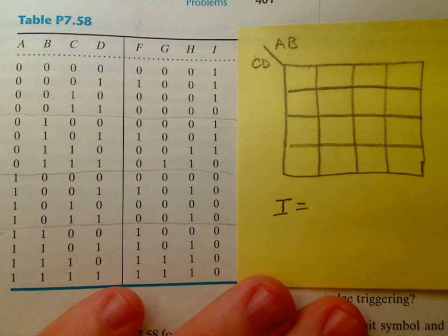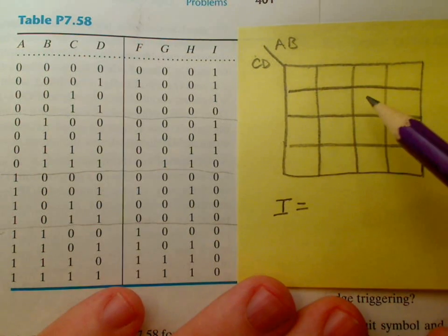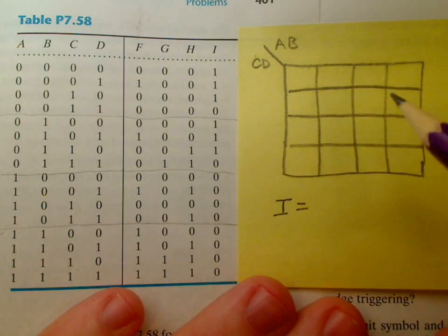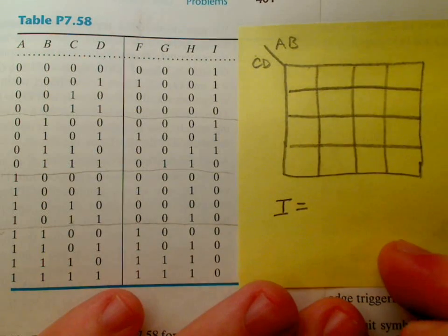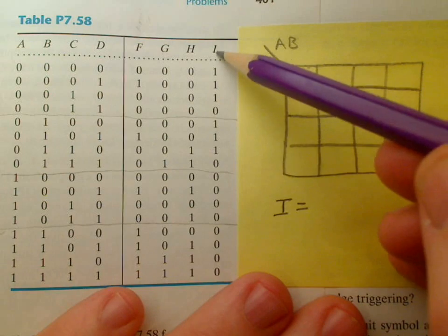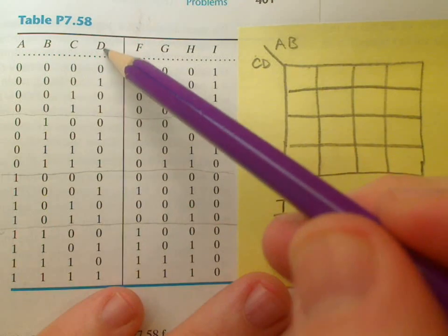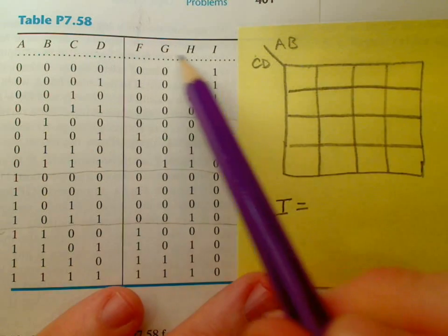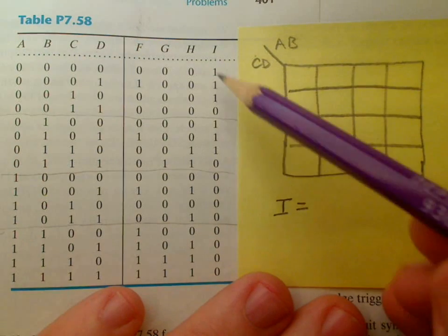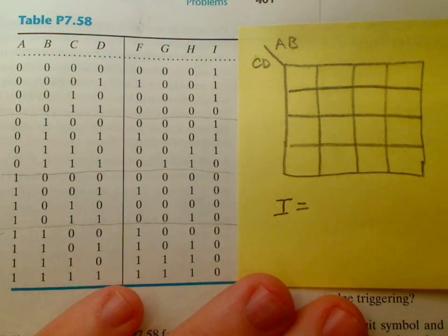This is table 7.58, and I'm going to try to use a Karnaugh map to find the minimum number of logic gates I need to figure out what the output I is in terms of inputs A, B, C, and D. So these are my inputs, these are my outputs. I'm going to focus only on column I in this example.